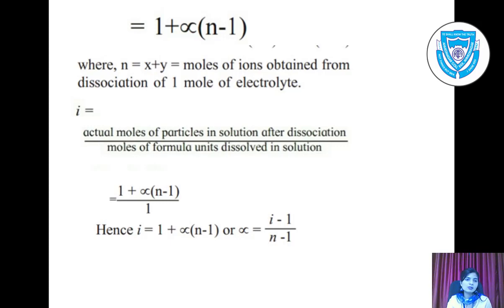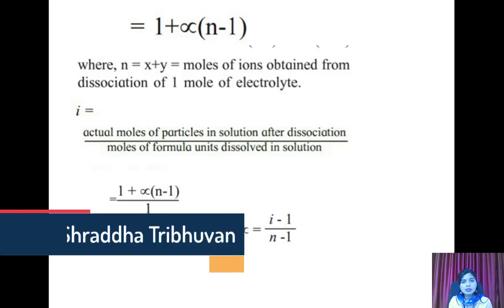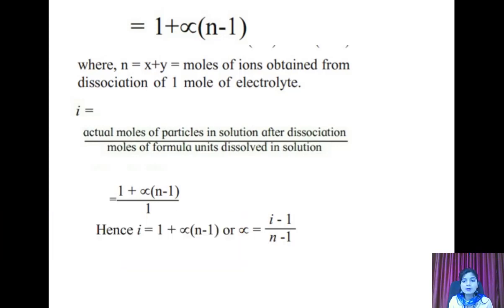So osmotic pressure is the fourth colligative property we have seen. In this chapter we have covered Henry's law, Raoult's law, and all four colligative properties: lowering of vapor pressure, elevation in boiling point, depression in freezing point, and osmotic pressure. Prepare all four colligative properties properly, solve the problems given in the textbook, work through derivations repeatedly, and pay attention to the graphs as they help in understanding the concepts clearly. Study properly — all the best.